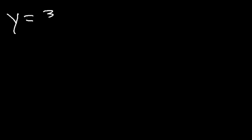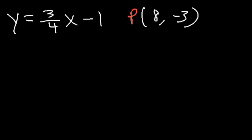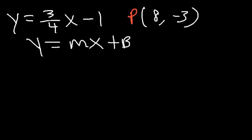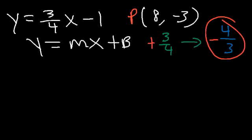What about this one? y is equal to 3 over 4 x minus 1, and it passes through the point 8, negative 3. Write the equation of the line that is perpendicular to this line. Using the slope-intercept equation y equals mx plus b, we need to find the slope. It changes from 3 over 4 — flip the fraction to 4 thirds and change the sign from positive to negative. So negative 4 thirds is the slope of the perpendicular line.